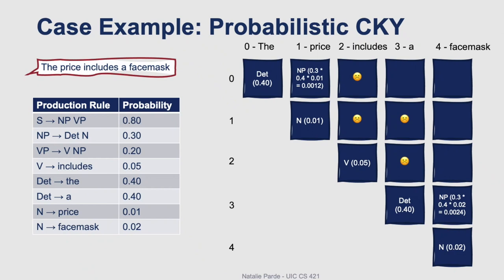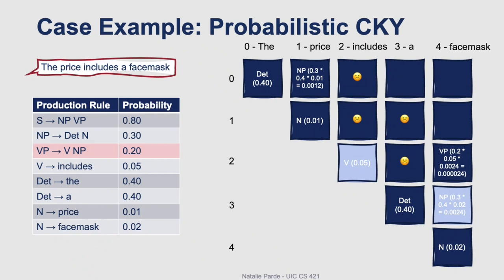We'll move on to the last three-word constituent, "includes a face mask". For the first thing we check — a verb followed by a noun phrase — we do indeed find a match, so we go ahead and compute a probability of 0.000024. It's conceivable that there could be a second match too, but that option turns out to be impossible to match, so we just have the verb phrase in this cell.